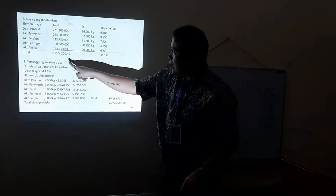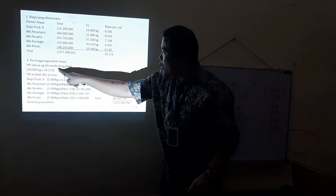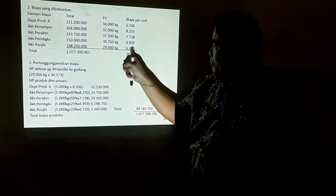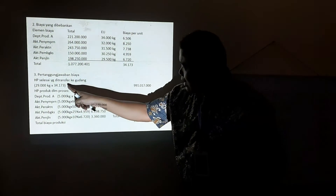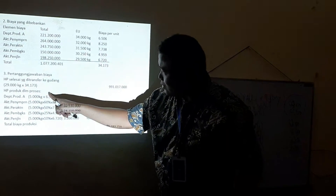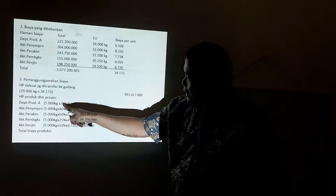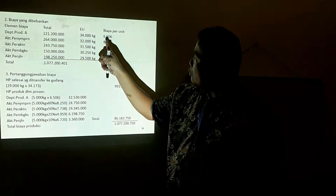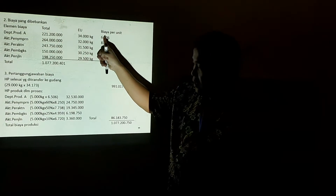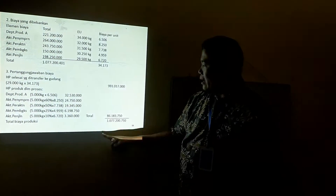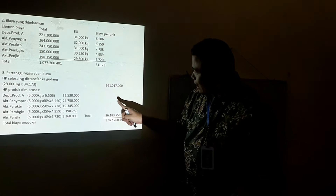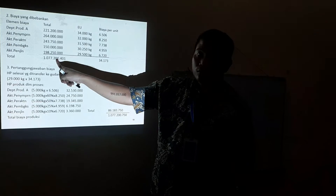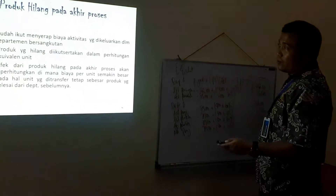Penyempurnaan dan aktivitas lainnya dihitung seperti biasa: total biaya dibagi equivalent unit. Pertanggungjawaban: harga pokok produk yang ditransfer ke gudang = 29.000 x harga pokok per unit. Harga pokok produk dalam proses Departemen A: sisa 5.000 x tingkat penyelesaian 100% x 6.600. Penyempurnaan dan seterusnya langkahnya sama, sehingga total biaya 177.204 sekian.